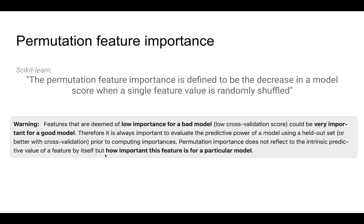Now let's look at permutation feature importance. This is another way to visualize the importance of a feature. For example, if you have rainfall and temperature as features and crop yield as your target, you randomly shuffle one feature, fit the model, and see if that affects the final score. If it does have an effect, it means that feature is likely important.